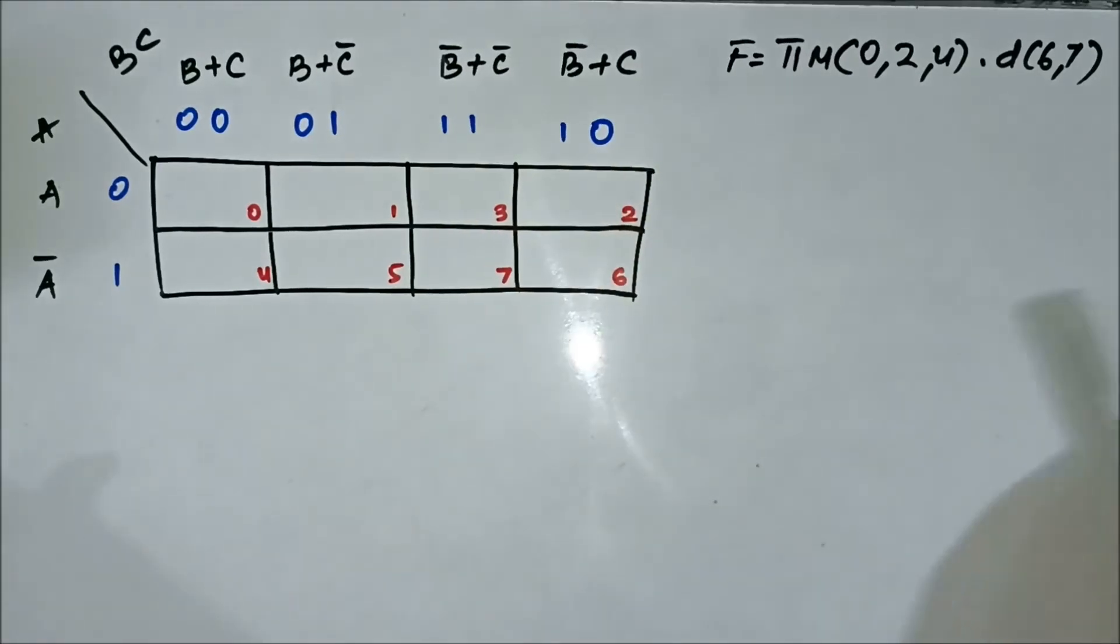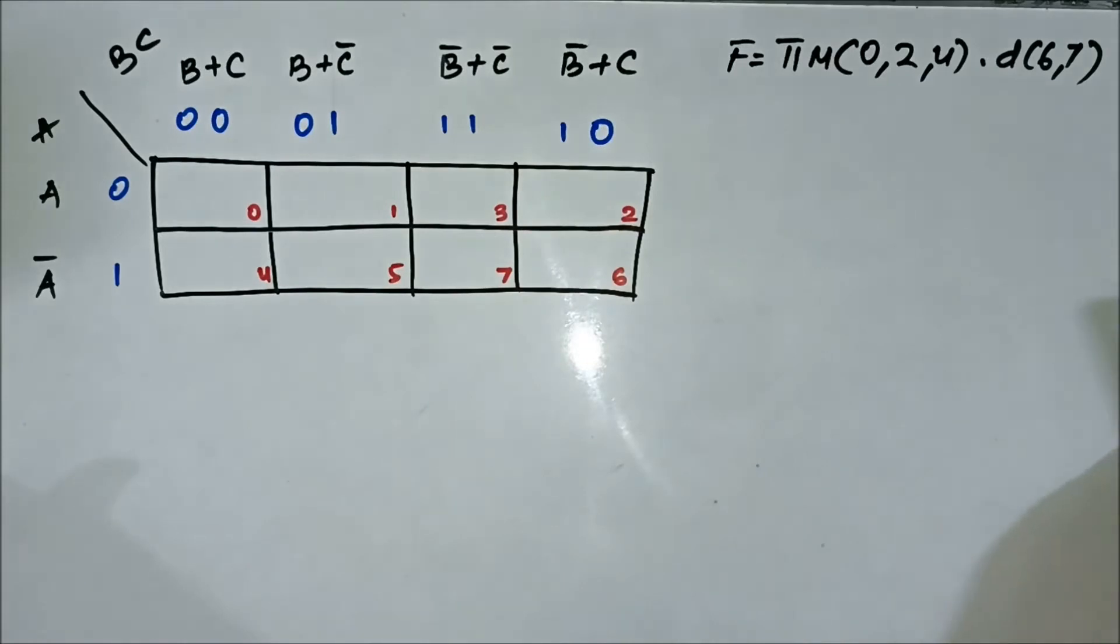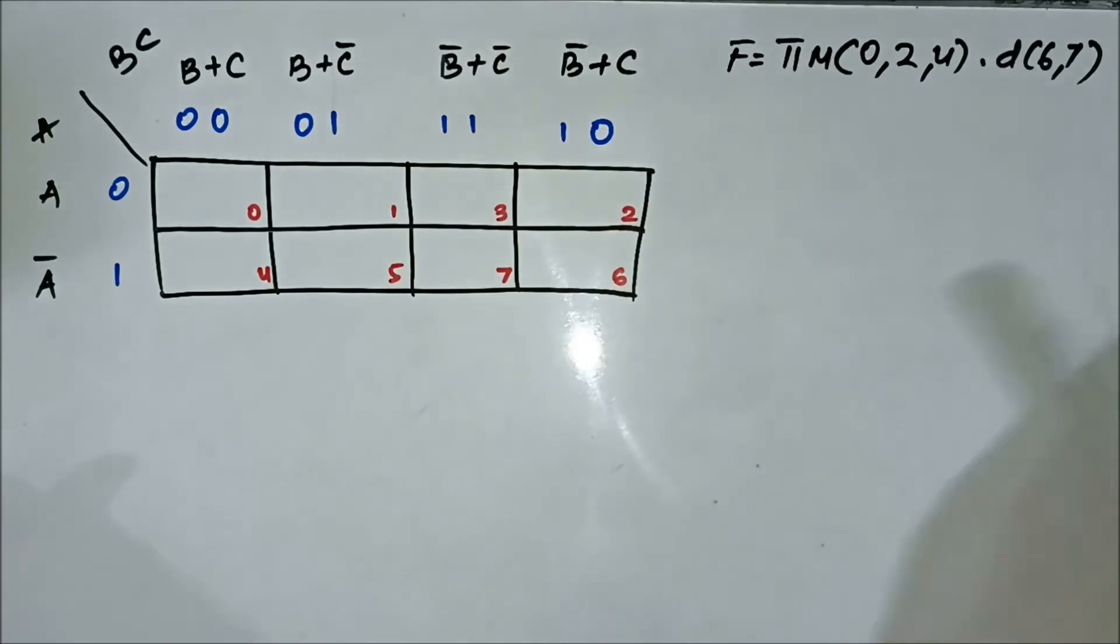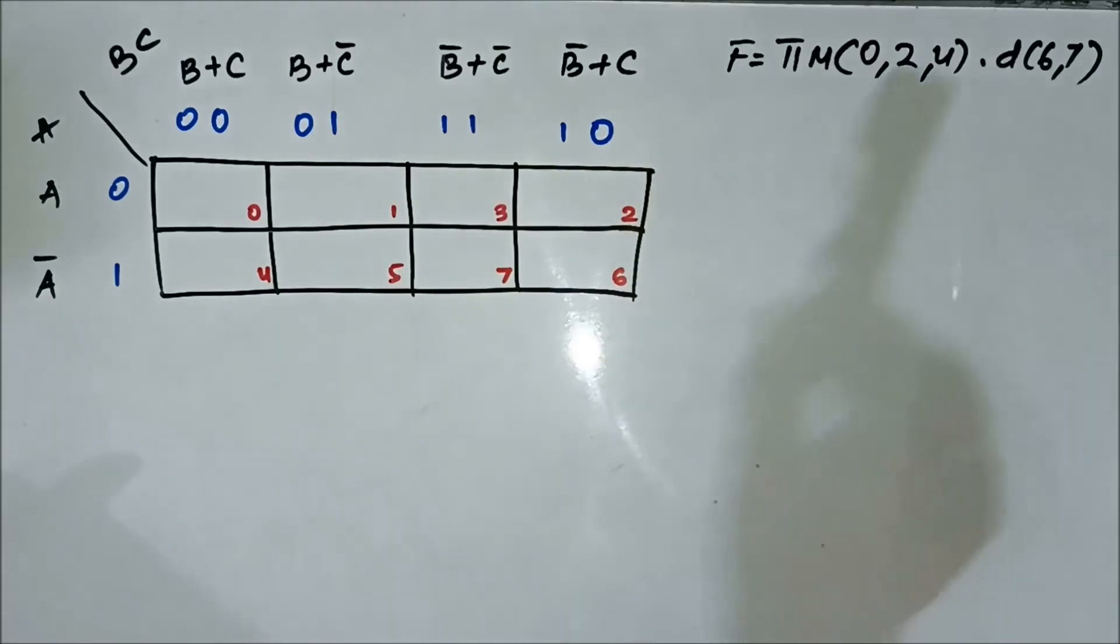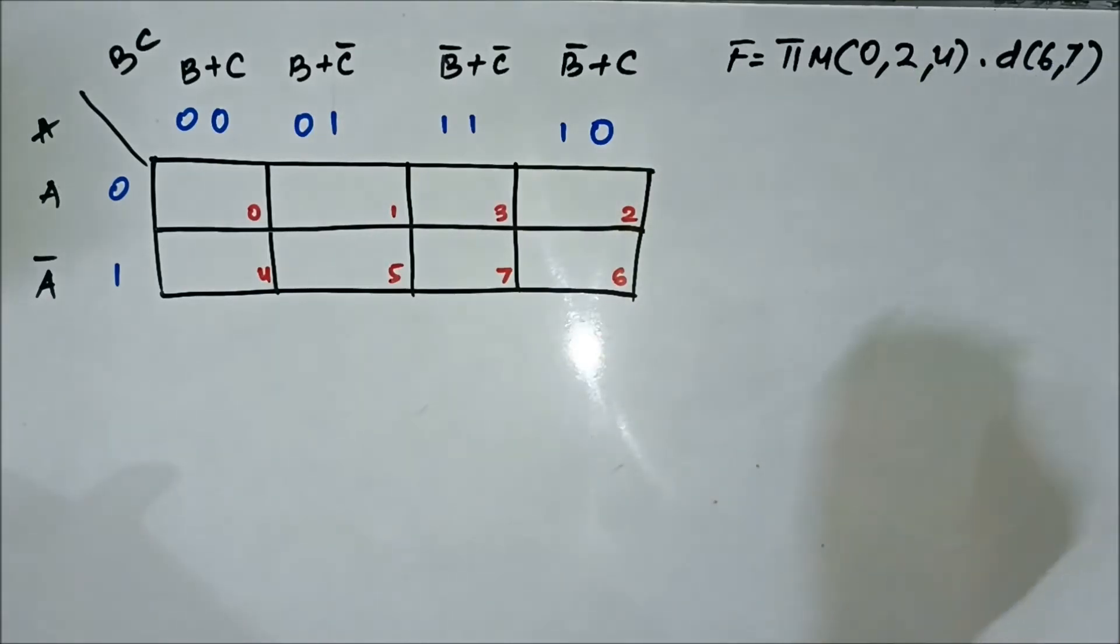Here we have this POS expression which is given in terms of the max term values and then we have the don't care values. First we will plot them in the 3 variable KMAP and then we will simplify by identifying the common terms.